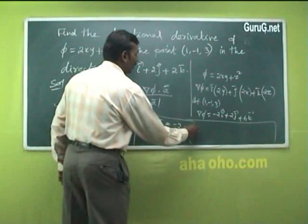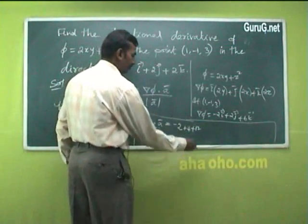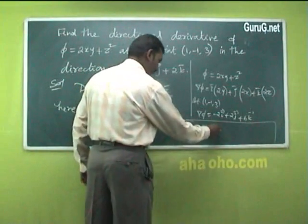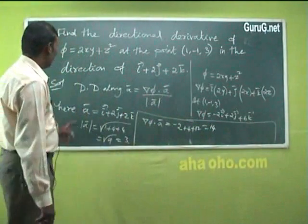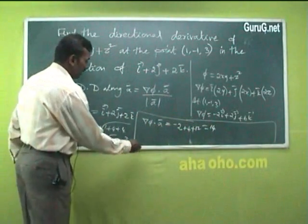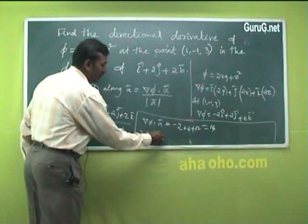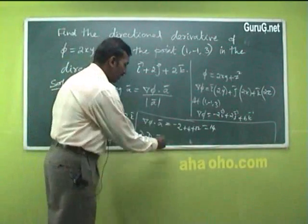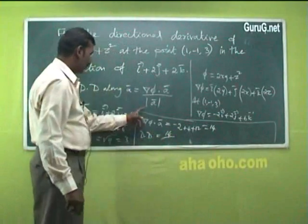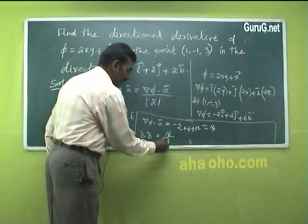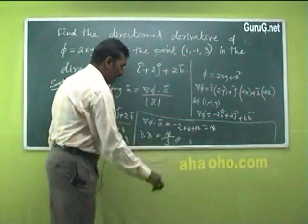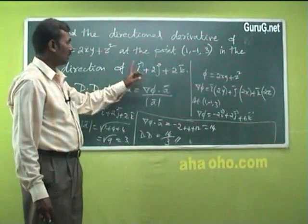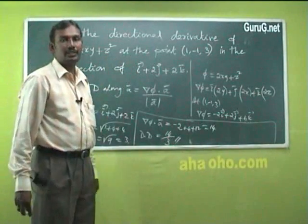Computing del φ · A: (−2)(1) + (2)(2) + (6)(2) = −2 + 4 + 12 = 14. Therefore, the directional derivative = del φ · A / |A| = 14 / 3. So 14/3 is the directional derivative of φ along that direction.